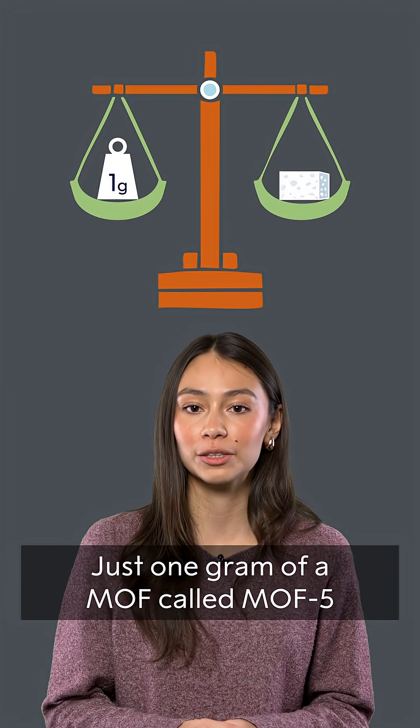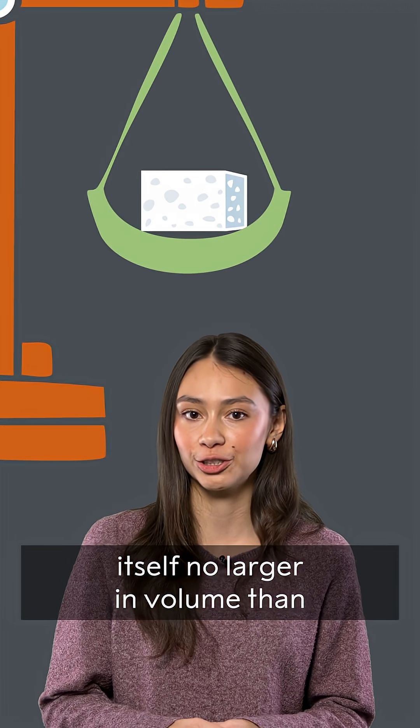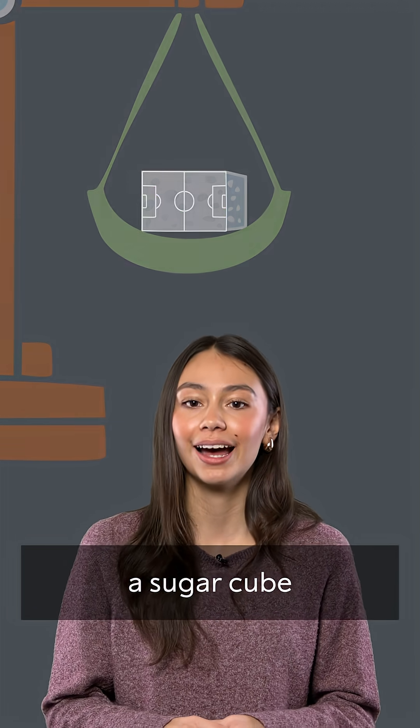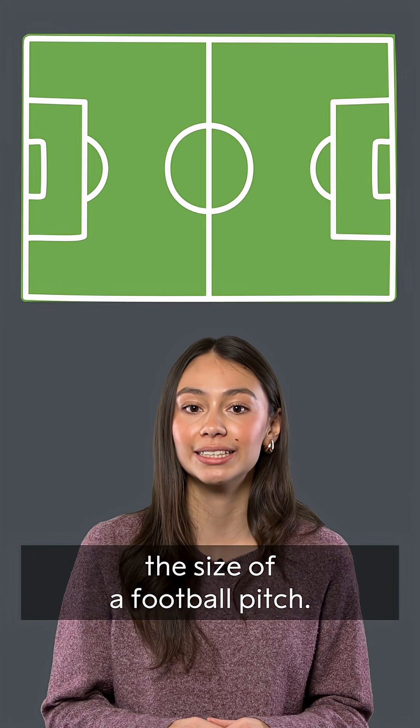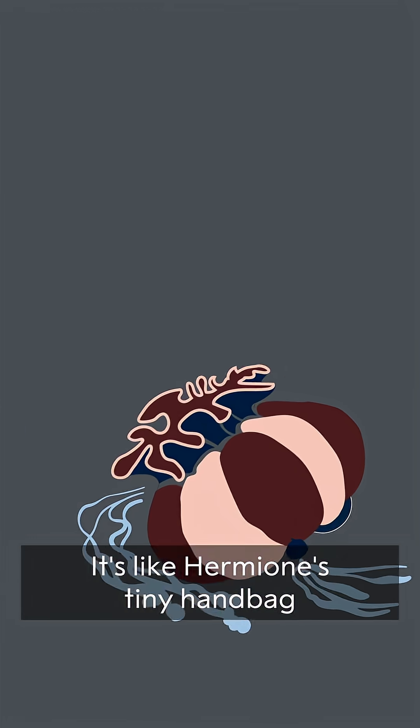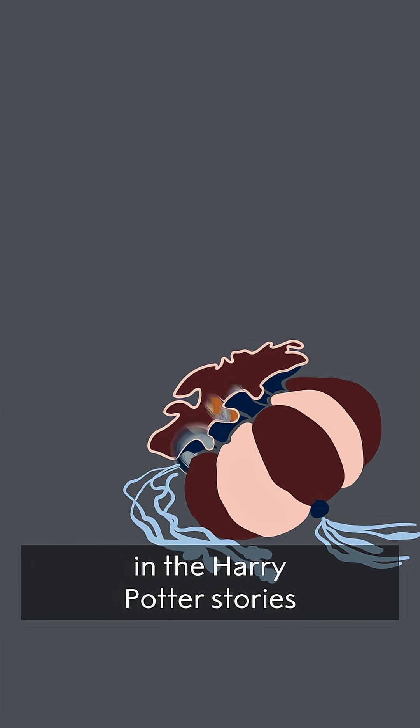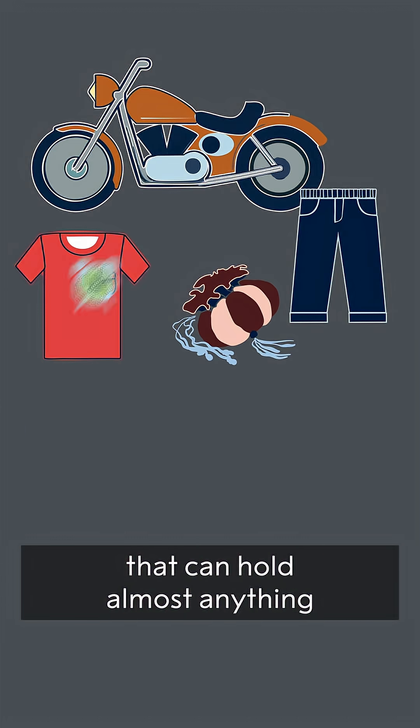Just one gram of a MOF, called MOF5, itself no larger in volume than a sugar cube, has an internal surface area the size of a football pitch. It's like Hermione's tiny handbag in the Harry Potter stories that can hold almost anything.